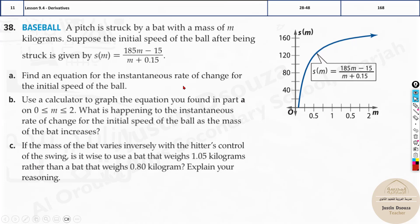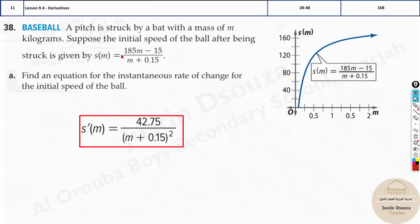Now a real world problem. A pitcher struck by a bat with a mass of m kilograms. Suppose the initial speed of the ball after being struck is given over here. Find the equation of the instantaneous rate of change of the initial speed of the ball. The same question is explained in detail in question number 18. It's in the writing part. Now all you need to do is derive it. Instantaneous rate of change would be derivation of this. Derivation is by the quotient rule or you can check it by calculator method. Assume m value as 1.5. Substitute over here, derive it, and substitute x as 1.5. You can get the answer.